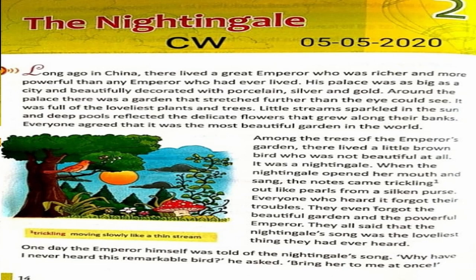Ivy ma'am is going to read out the same paragraph once again. Among the trees of the emperor's garden there lived a little brown bird who was not beautiful at all. It was a nightingale. When the nightingale opened her mouth and sang, the notes came trickling out like pearls from a silken purse. Everyone who heard it forgot their troubles. They even forgot the beautiful garden and the powerful emperor. They all said that the nightingale's song was the loveliest thing they had ever heard.